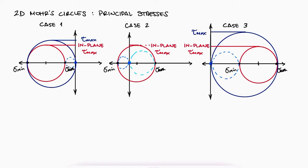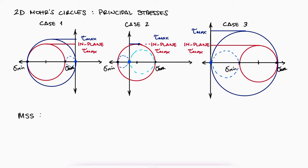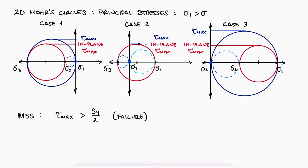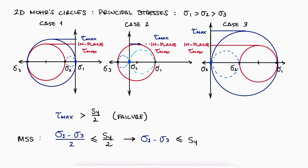Only for case 2, where one principal stress is negative and the other is positive, does the in-plane maximum shearing stress coincide with the overall maximum shearing stress. Since the maximum shearing stress criterion states that yield will only occur if the maximum shearing stress exceeds that associated with the yield strength during a tensile test, we always use the overall maximum shearing stress. Following the convention that sigma 1 is greater than sigma 2 greater than sigma 3, the overall maximum shearing stress is always equal to (sigma 1 minus sigma 3) / 2. This means we don't want sigma 1 minus sigma 3 to exceed the yield strength, and the factor of safety is the yield strength divided by (sigma 1 minus sigma 3).